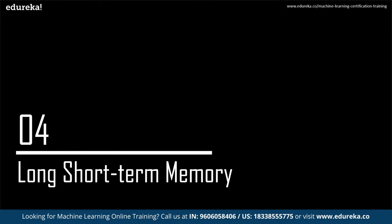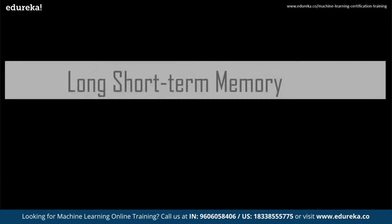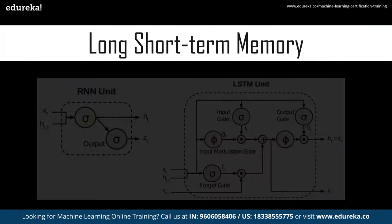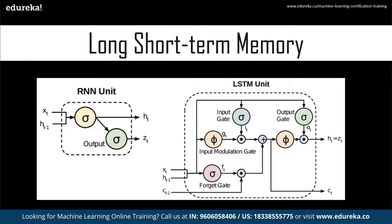Now let's understand LSTM, or long short-term memory. Traditional RNNs are not good at capturing long-range dependencies. When working with large datasets and multiple RNN layers, we face the vanishing gradient problem — during training of very deep networks, gradients decrease exponentially as they propagate through layers. These gradients are used to update weights, but when they vanish, weights stop updating and in the worst case the network stops training entirely. To overcome this, long short-term memory was introduced.